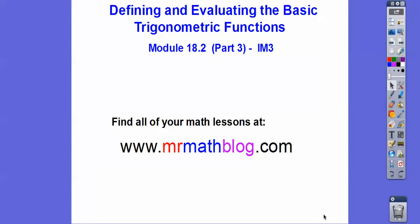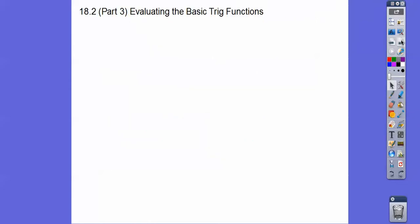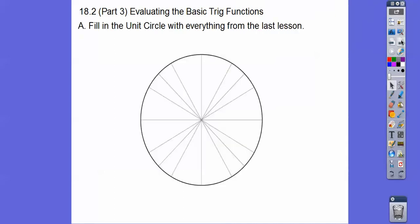Alright, you guys, here we go. We're doing our third lesson. We're going to find the actual trig functions of angles in both degrees and radians. So we've talked about the unit circle extensively. This is part three. Let's go ahead and fill in all the unit circles with everything from the last lesson.